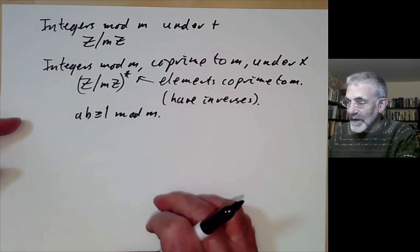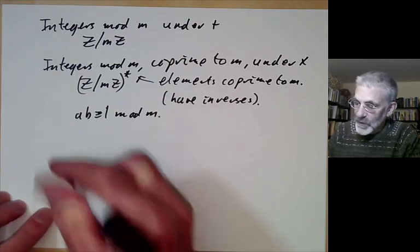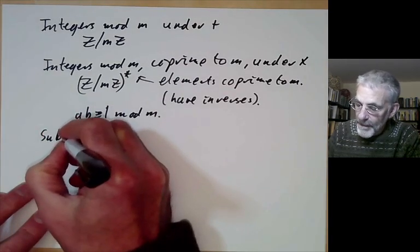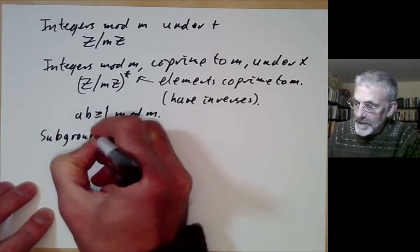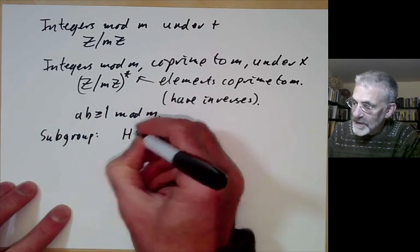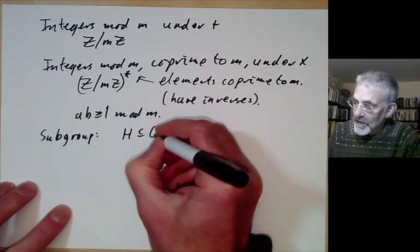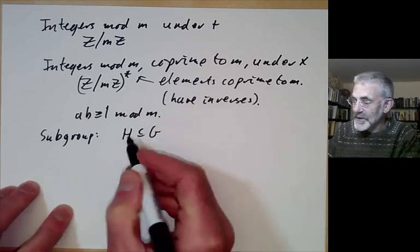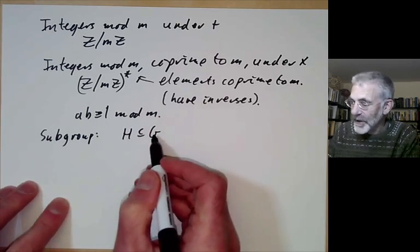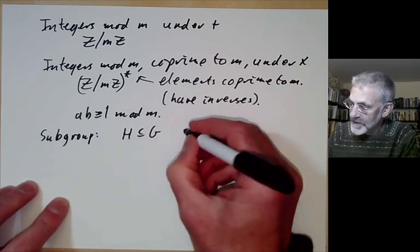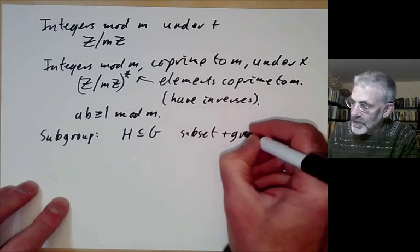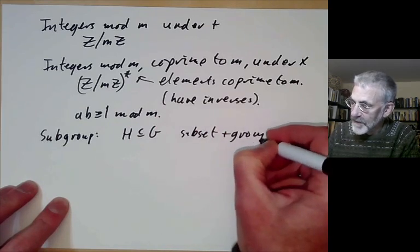Next, we recall what a subgroup is. A subgroup is a subset of a group H that's also a group under the same operation — so it's a subset plus a group, roughly speaking.